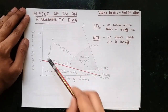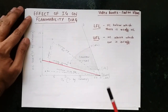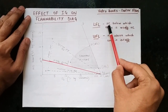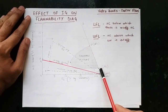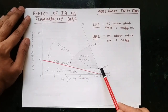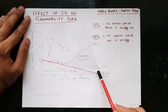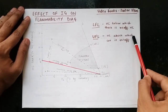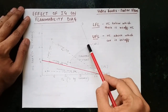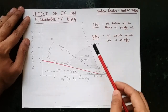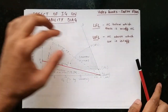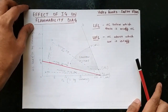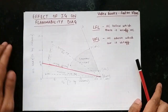LFL is the hydrocarbon concentration below which there is insufficient hydrocarbon for combustion — if the hydrocarbon is less than this point, it will not be combustible. UFL is the hydrocarbon concentration above which there is insufficient air for combustion to occur. LFL can also be termed as LEL — lower explosive limit — and UFL can also be termed as UEL — upper explosive limit. Both are the same.